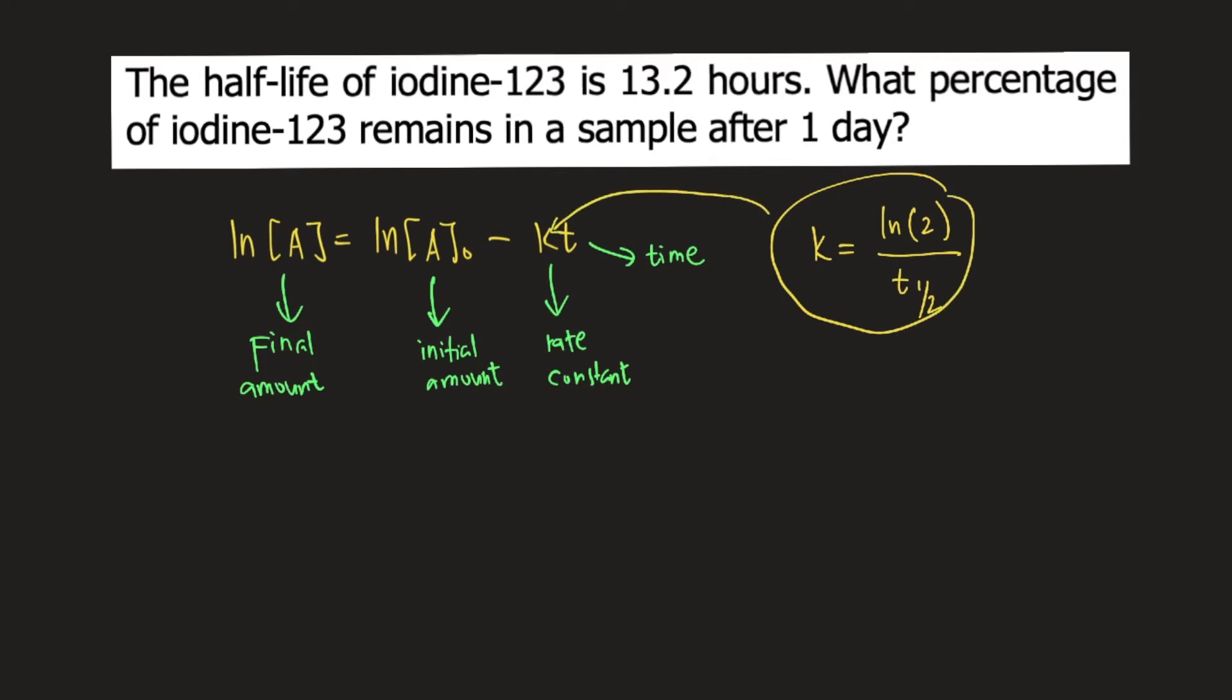So our equation becomes ln[A] equals ln[A]₀ minus ln(2) over half-life times time.